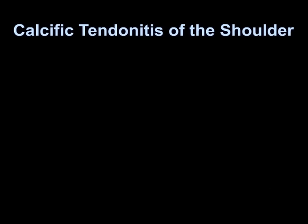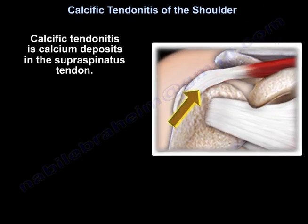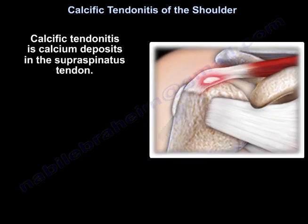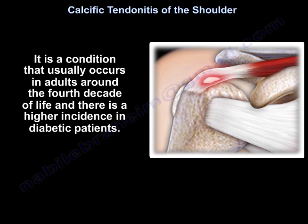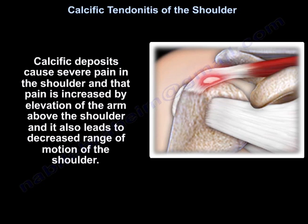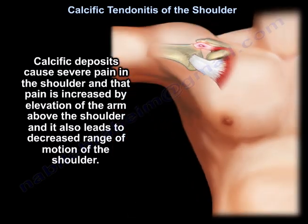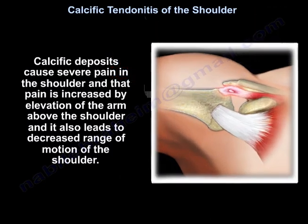Calcific tendinitis of the shoulder involves calcium deposits in the supraspinatus tendon. It is a condition that usually occurs in adults around the fourth decade of life, and there is a higher incidence in diabetic patients. Calcific deposits cause severe pain in the shoulder, and that pain is increased by elevation of the arm above the shoulder. It also leads to decreased range of motion of the shoulder.